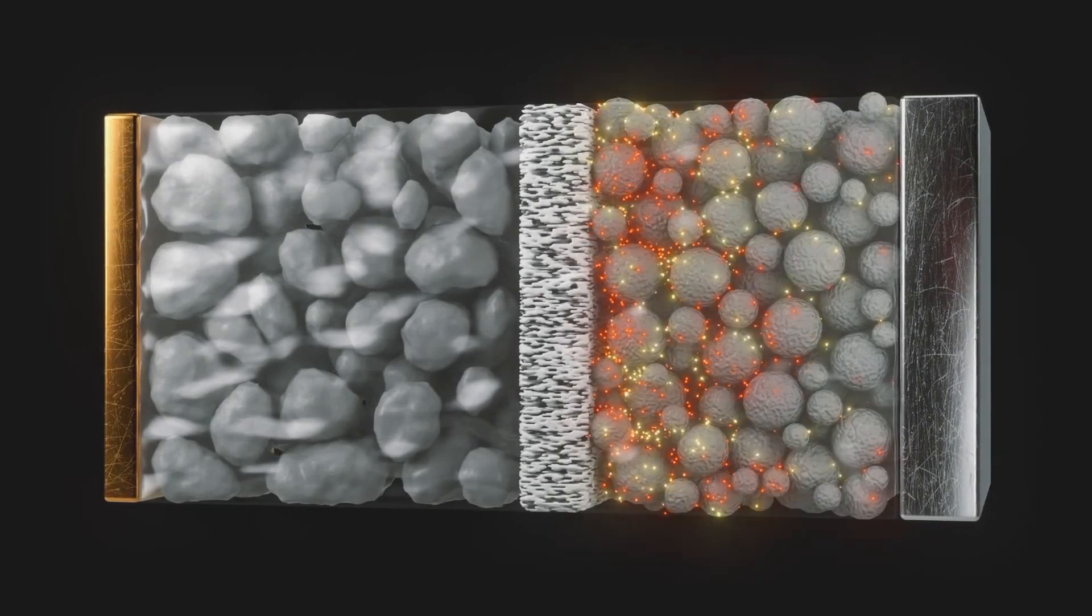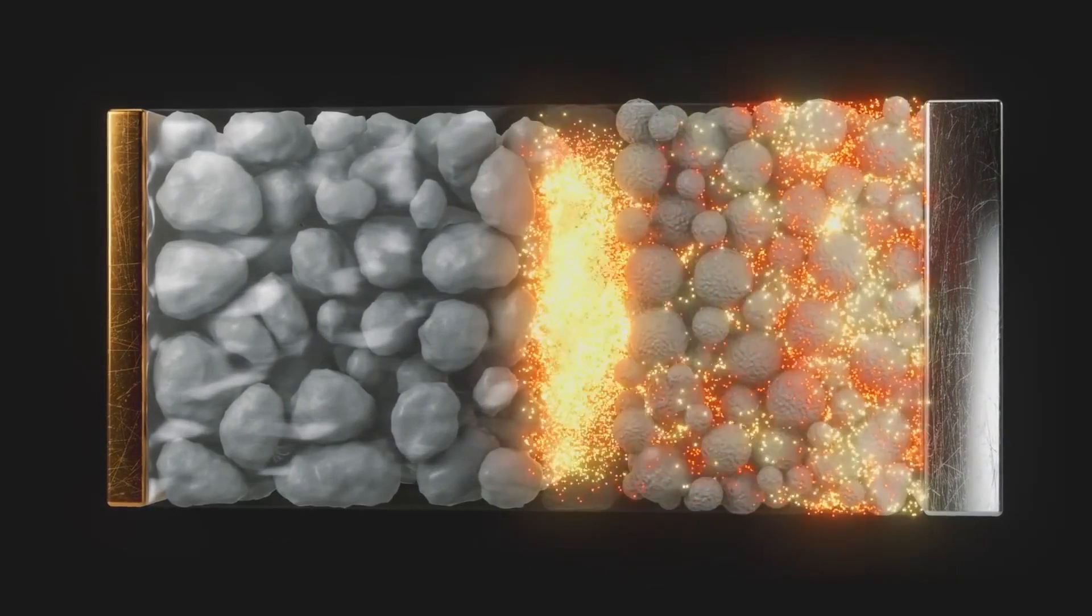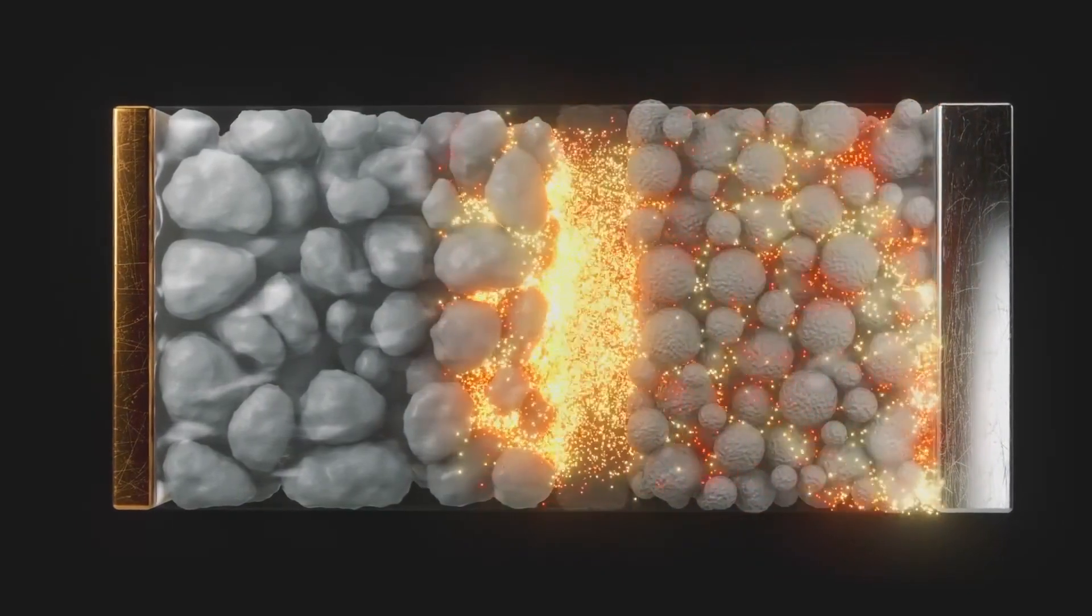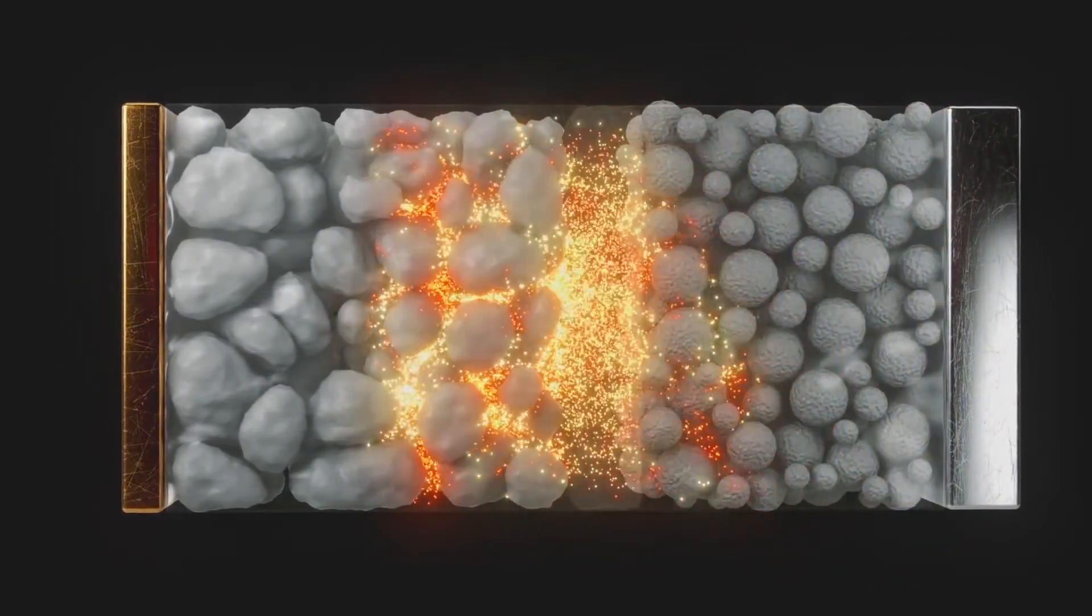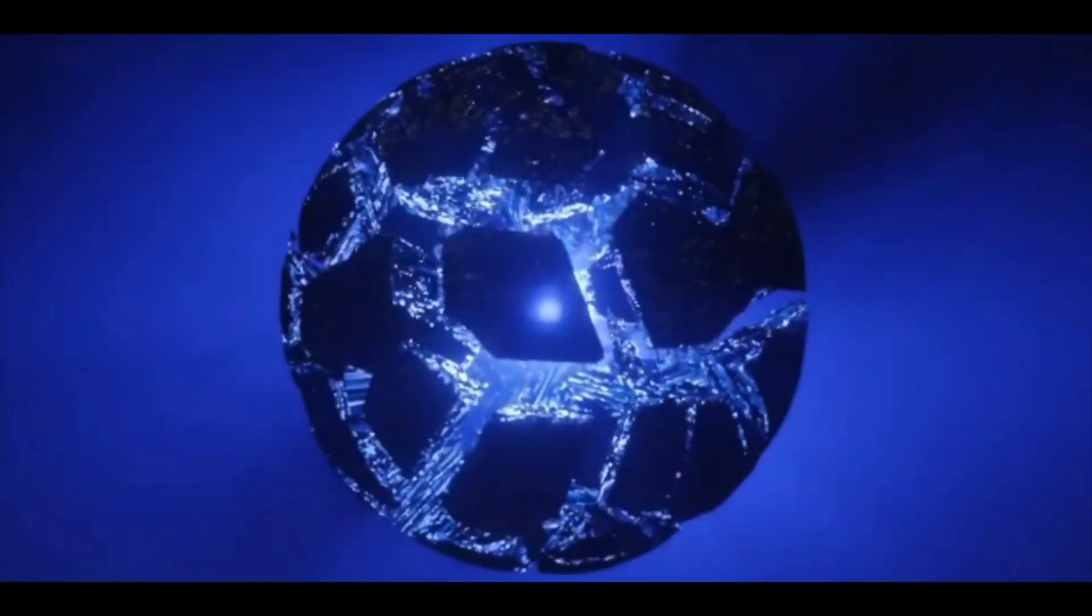So what exactly happens when the volume of silicon expands and contracts during charge and discharge of the cell? There are three major issues determined from many academic studies on silicon anodes. First, the silicon particles pulverize and fracture.